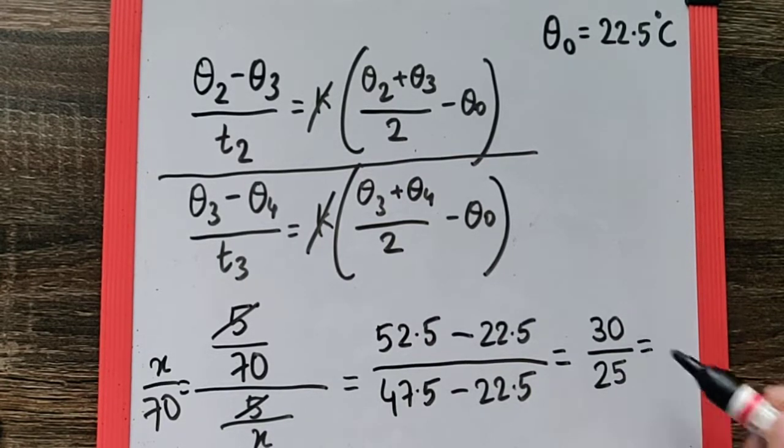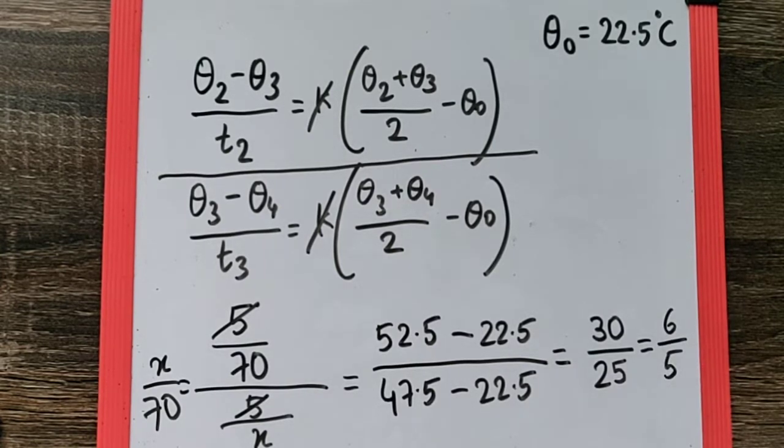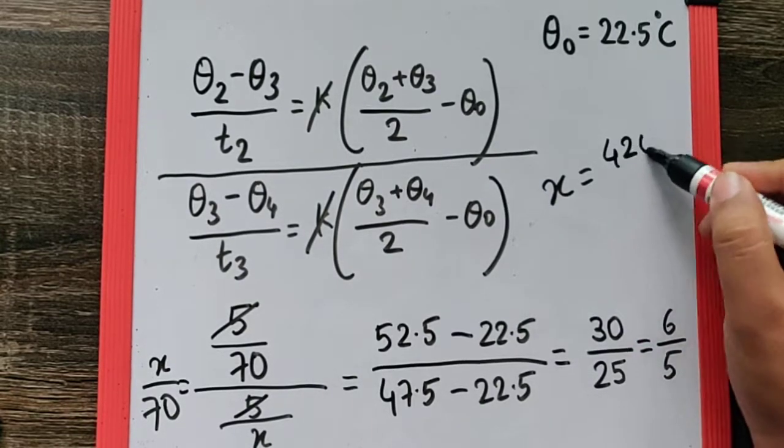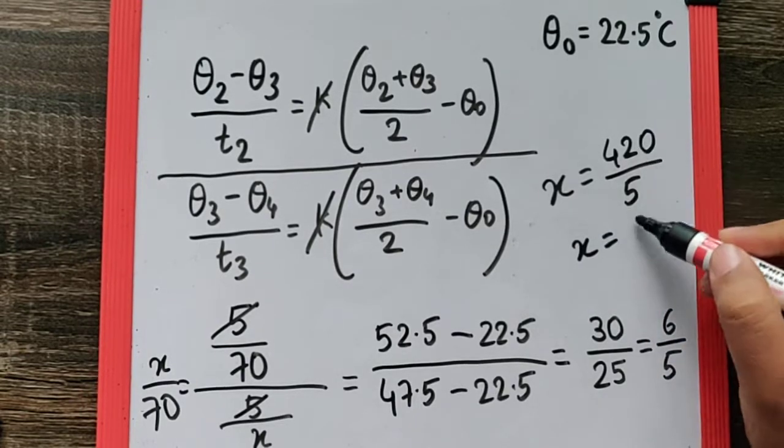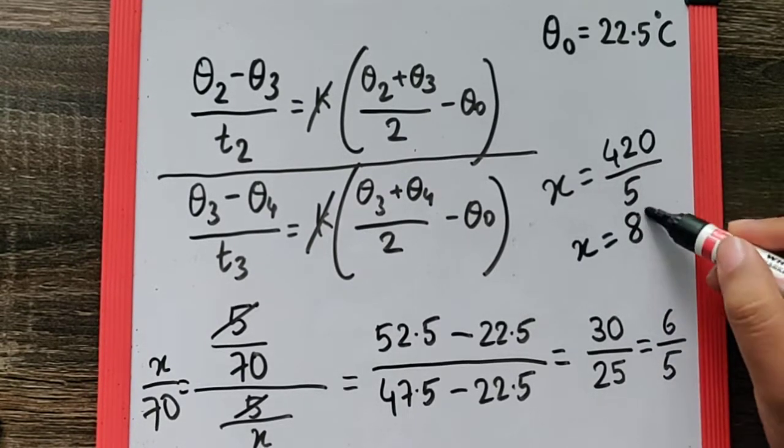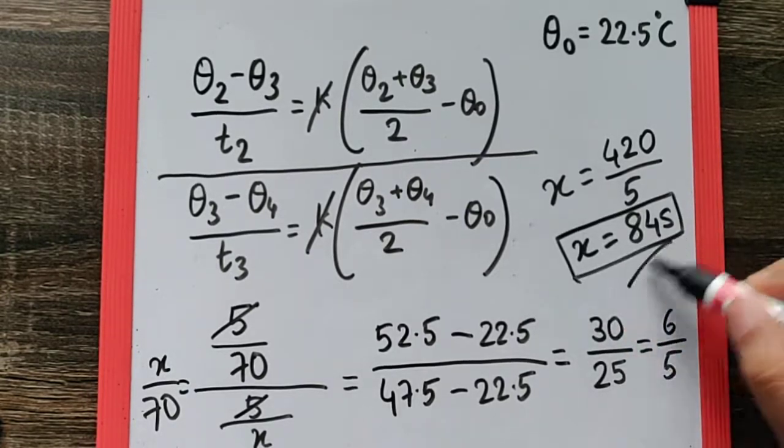We get the x value as 70 into 6, that is 420 upon 5, which is going to be 84 seconds. So 84 seconds is your final answer.